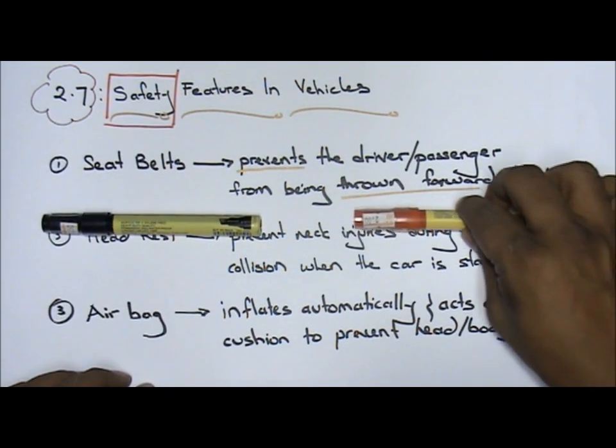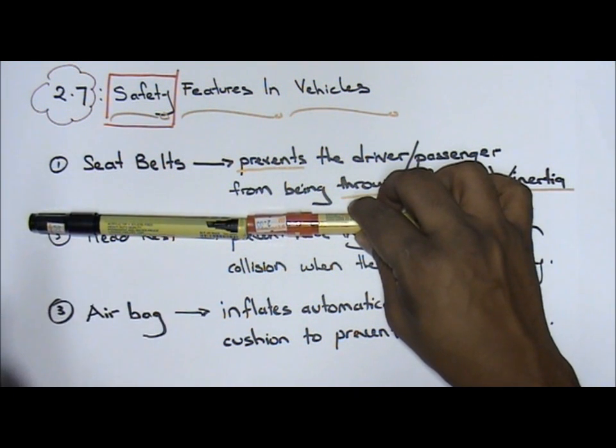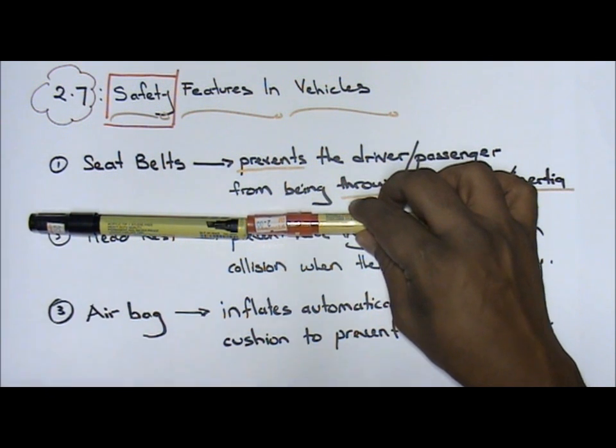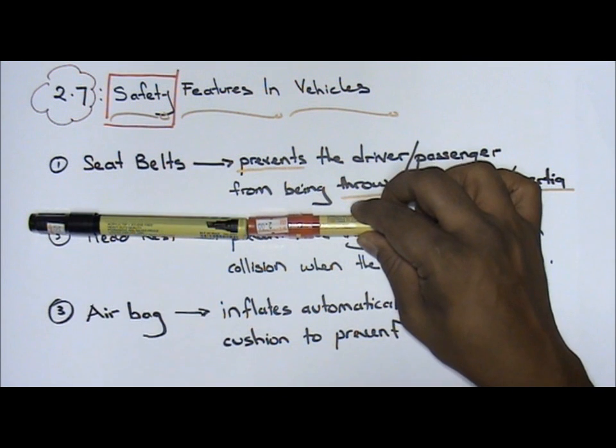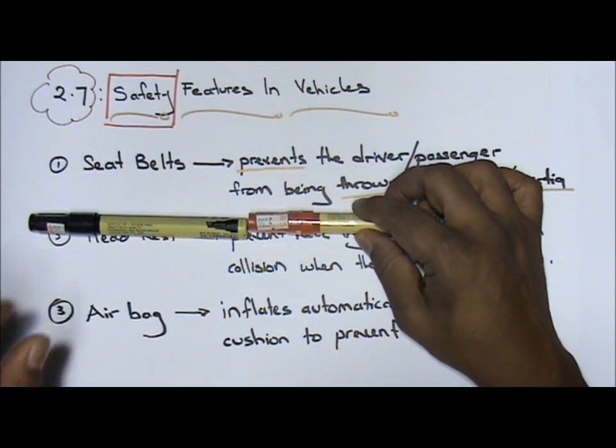This red car over here collides with your car. What happens over here, without a headrest, your body and your neck, mostly your neck, will tend to move backwards a lot. When your neck tends to move backwards a lot, you will have neck injuries. In certain cases, it's fatal, dangerous.